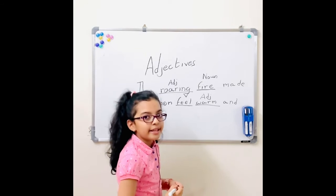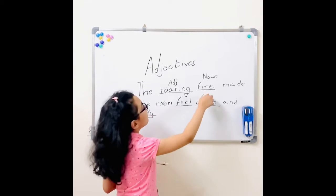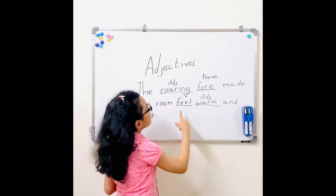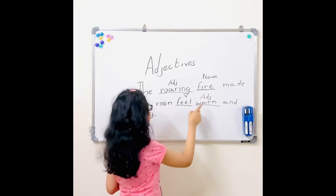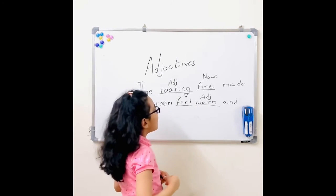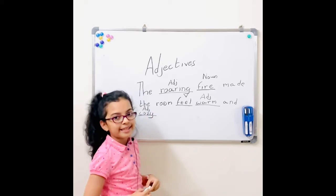See, like I said, an adjective could come before a noun, and it could come after a verb sometimes too. Now I'll step aside so you can take a look at this sentence.